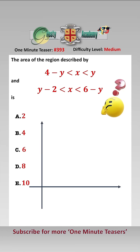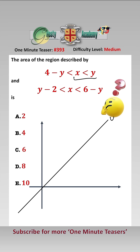First we need to draw these four inequalities. So y greater than x — that's an easy one to start with. There is the line y equals x, so y greater than x is anything that side of the line.